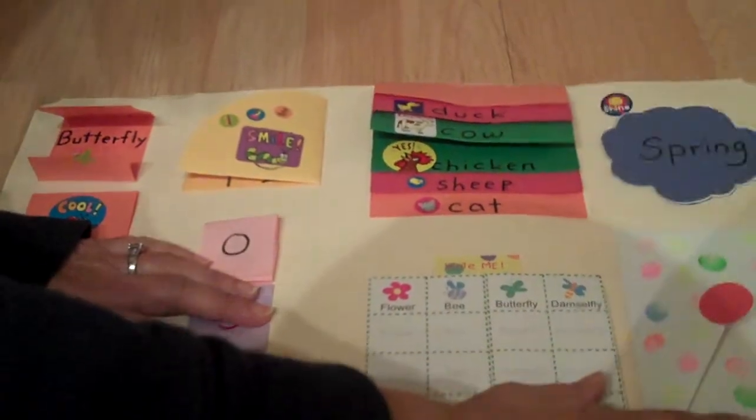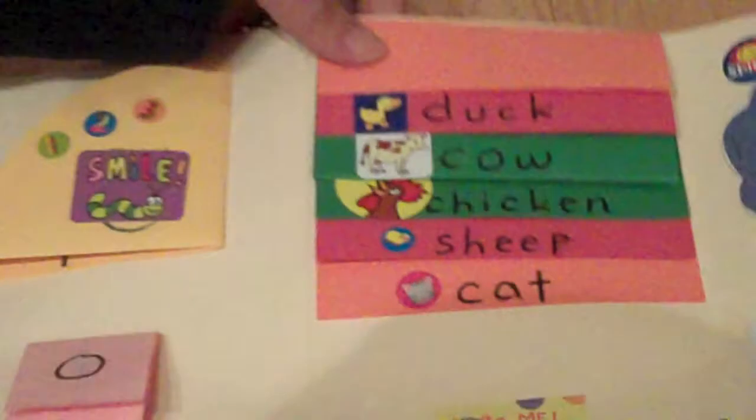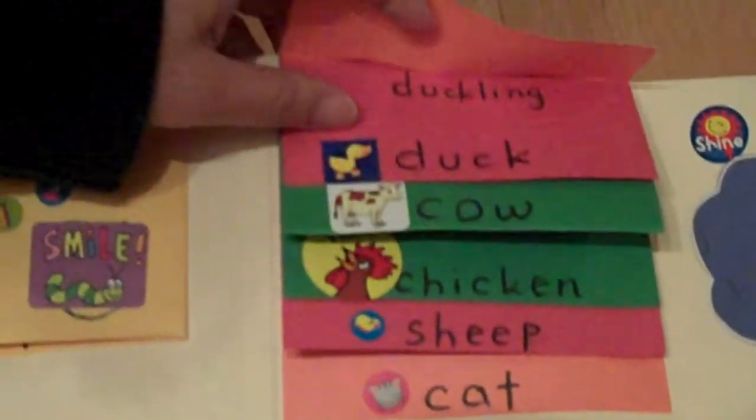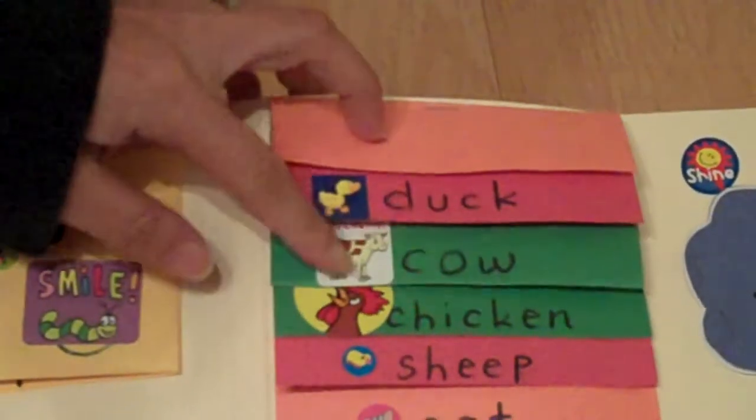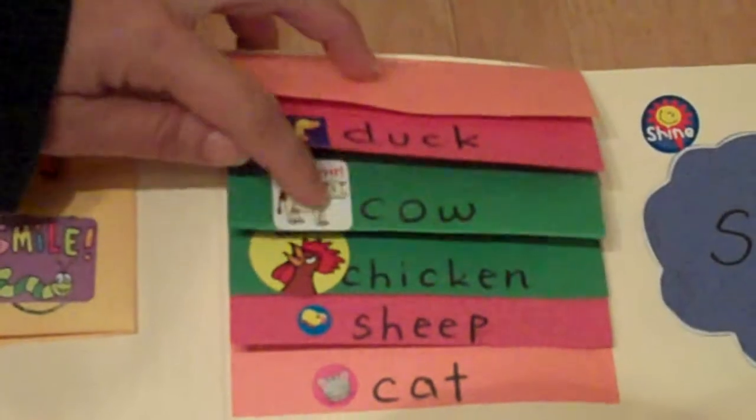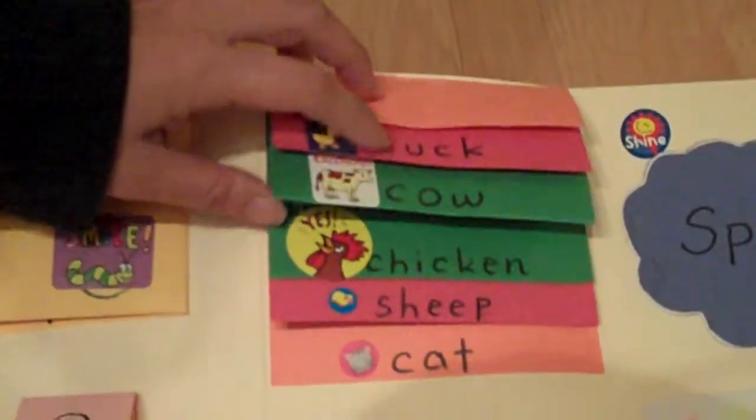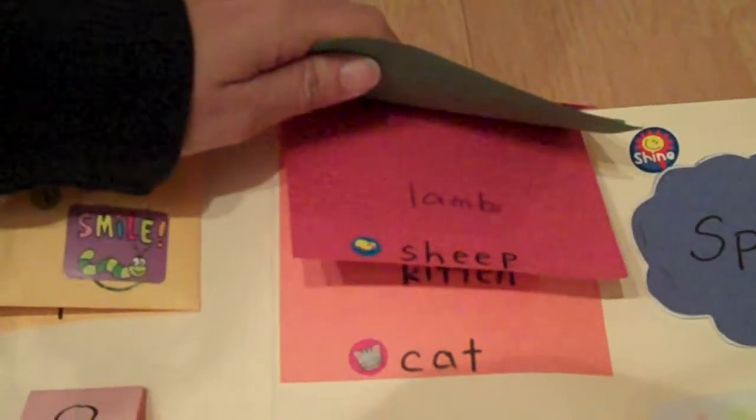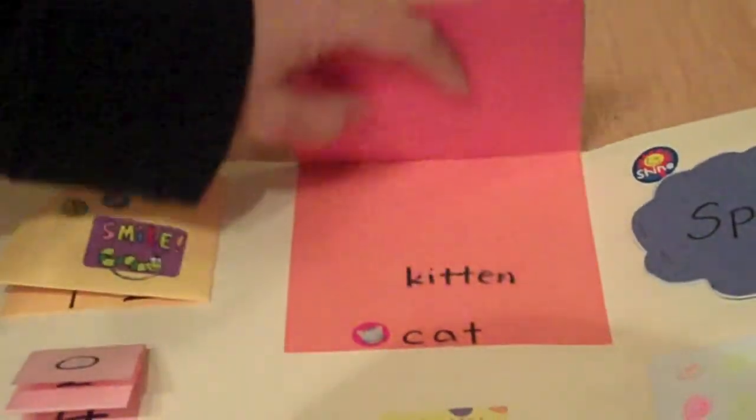And you open up this side. I have the book for the baby animal's name. And then again I used the stickers. Like a duck, duckling, cow and calf, chicken and the chick, and lamb for sheep and kittens for cats.